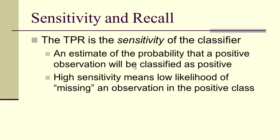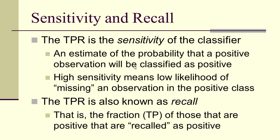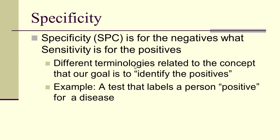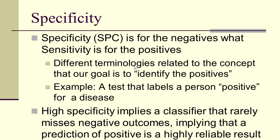The true positive rate is called the sensitivity of the classifier. It's an estimate of the probability that a positive observation will be classified as positive. High sensitivity means low likelihood of missing an observation in the positive class. It's also known as recall — it can be interpreted as the fraction of those that are positive that are recalled as positive. Specificity, on the other hand, is for the negatives what sensitivity is for the positives. If our predictive model is a test that labels a person positive for a disease, then high specificity means the classifier rarely misses negative outcomes.